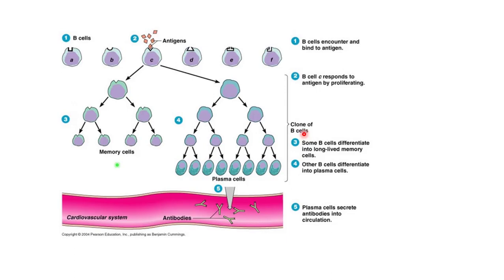To explain the clonal theory with an example: suppose we have an antigen and six types of B cells — A, B, C, D, E, and F. The antigen binds to a specific B cell — in this case, the one designated as C. When the antigen recognizes and binds to the receptor on cell C, this B cell proliferates into two types of cells: memory cells and plasma cells. A large number of plasma cells are produced through clonal selection — meaning all these cells are clones derived from that particular B cell.